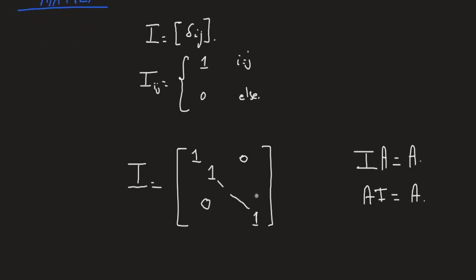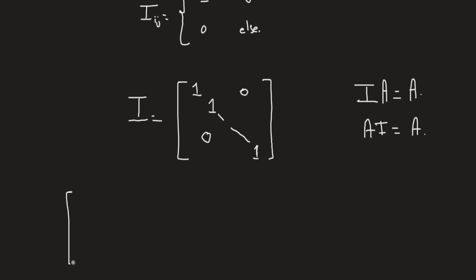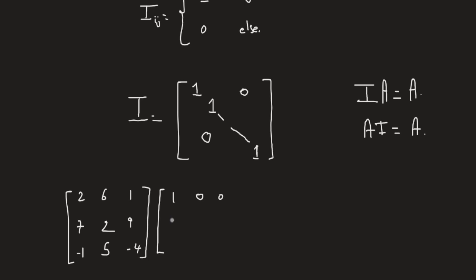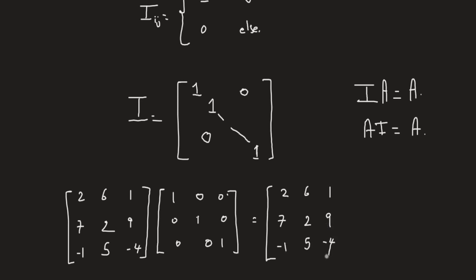Let's see why this works. Take the matrix [2, 6, 1; 7, 2, 9; -1, 5, -4] and multiply it by the suitable identity matrix. Since it's a 3×3 matrix, we use the 3×3 identity. Multiplying through — grabbing each row with each column — we get back 2, 6, 1, then 7, 2, 9, then -1, 5, -4: exactly the same matrix.